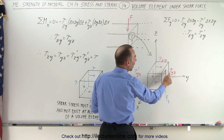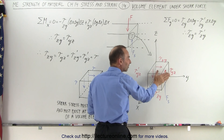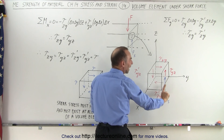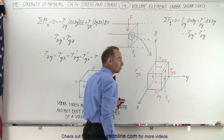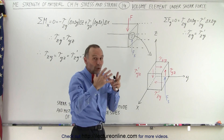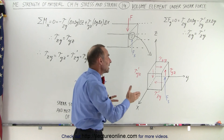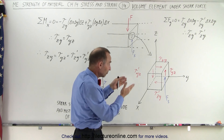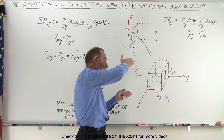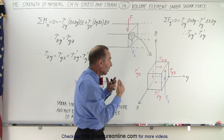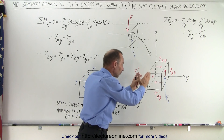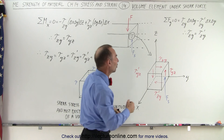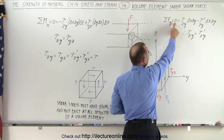Let's call that tau_yz, because it's situated on the right side of the volume and it's pointing in the upward direction — the z direction. Since that volume element doesn't go anywhere, it's a static situation, there must be another shear force on the other side in the opposite direction of equal magnitude, otherwise that volume element would either rotate or move up or down. So the sum of all forces in the y direction should add up to zero.